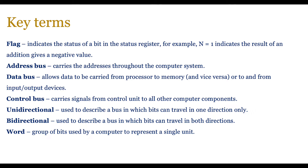We're also going to be looking at the different types of buses: address bus, data bus, and control bus. Some of these are unidirectional, meaning data goes in one direction only. Others are bidirectional, which means data goes both ways. The final key term is 'word', which is basically a group of bits used by a computer to represent a single unit.